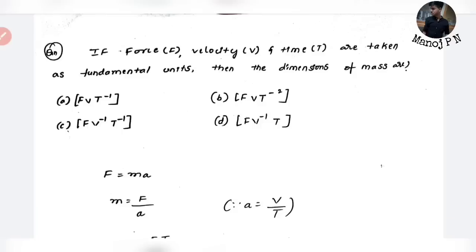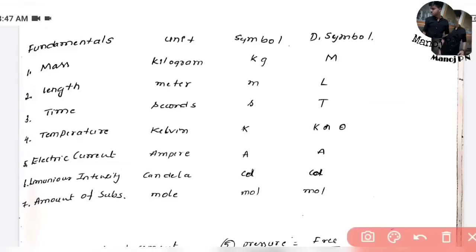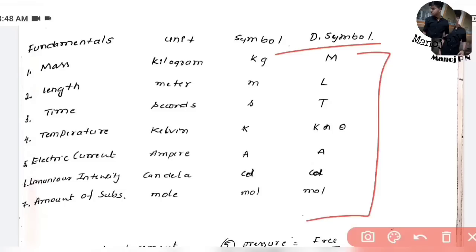First, we have to do dimension analysis — that is fundamental. We will cover the basics, correct the concepts, do all the dimension analysis, dimension formulas, and then ask questions. Now, the basic thing is very important: fundamental quantities, units, and dimensions. Seven fundamental quantities are important.